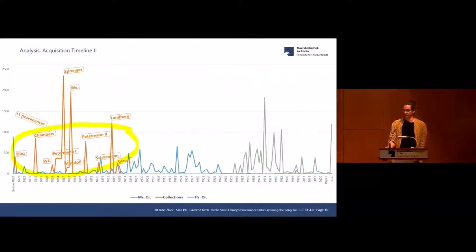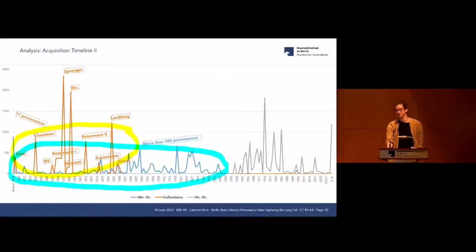These are eleven different provenances. If we look at the data we have for the Ms.or. manuscripts, we have more than 500 different provenances for this time frame, just as a side note, 256 for the Hs.or. post-Second World War manuscripts acquired post-Second World War.